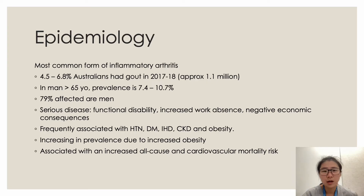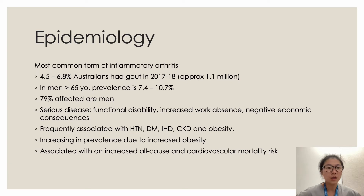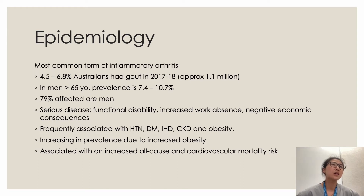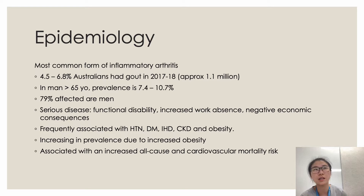Starting with gout: it is the most common form of inflammatory arthritis, with a prevalence of about four to seven percent in Australians. This is particularly high in elderly males, where prevalence can be up to seven point five to ten percent, and four out of five affected people are male. It causes negative economic impact through work absence and functional disability, and is commonly associated with metabolic disorders such as diabetes, hypertension, ischemic heart disease, and CKD. There is an increasing prevalence correlated with rising obesity, and gout is associated with increased all-cause and cardiovascular mortality.